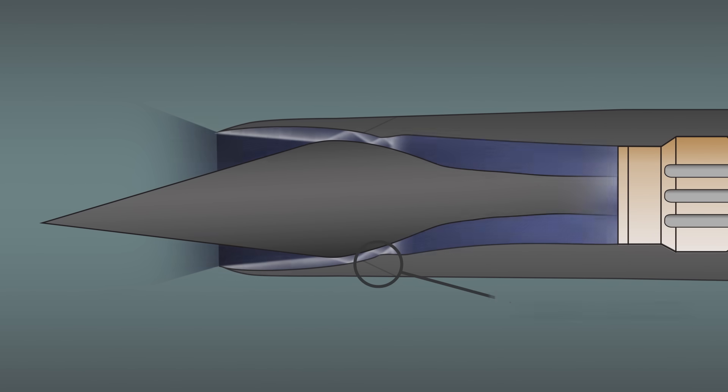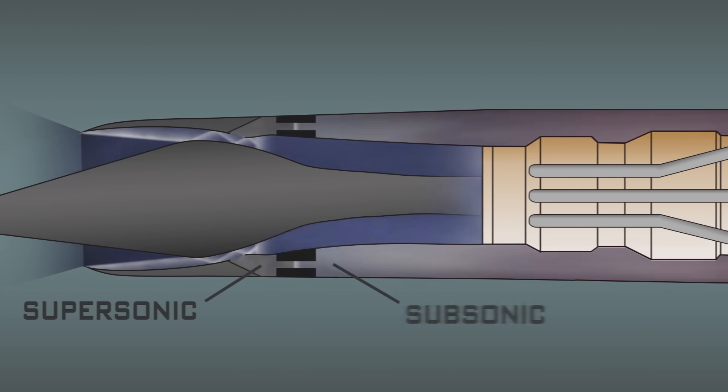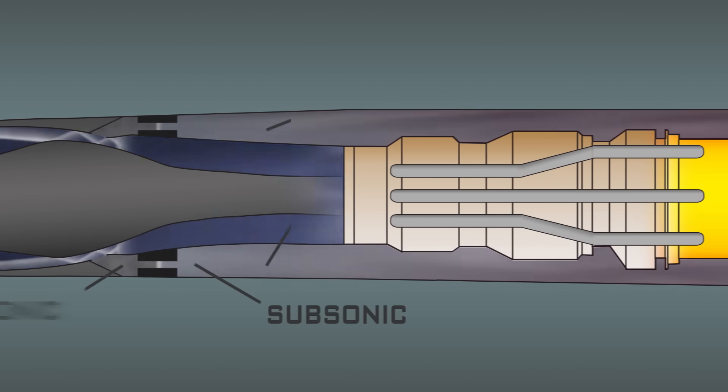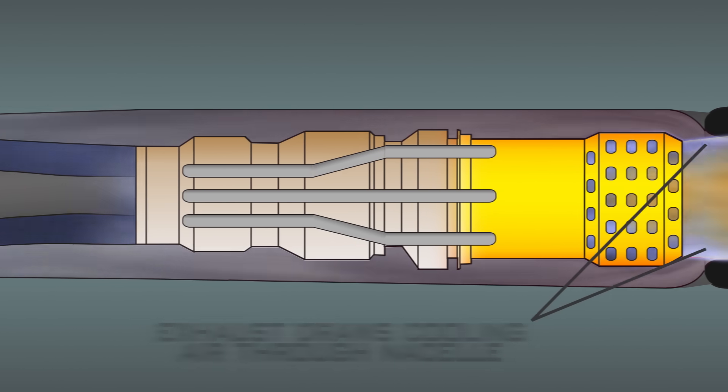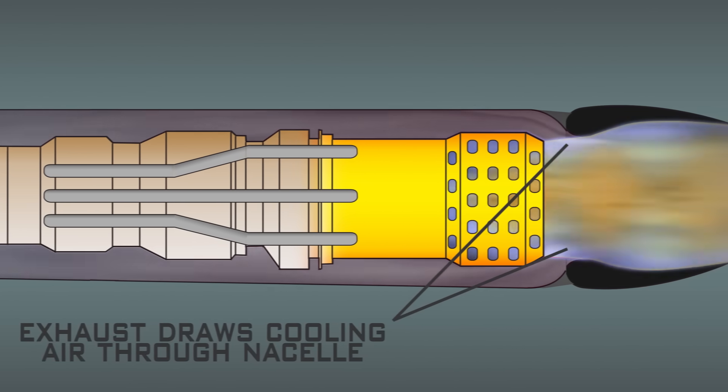Positioned inside the cowl is a cowl bleed that captures some of the incoming air and passes it through a ring of circular openings called shock traps that drop the airspeed to subsonic and guide it through the nacelle body around the engine for cooling. The air is drawn out of the nacelle by the fast-moving exhaust flowing through the ejector.